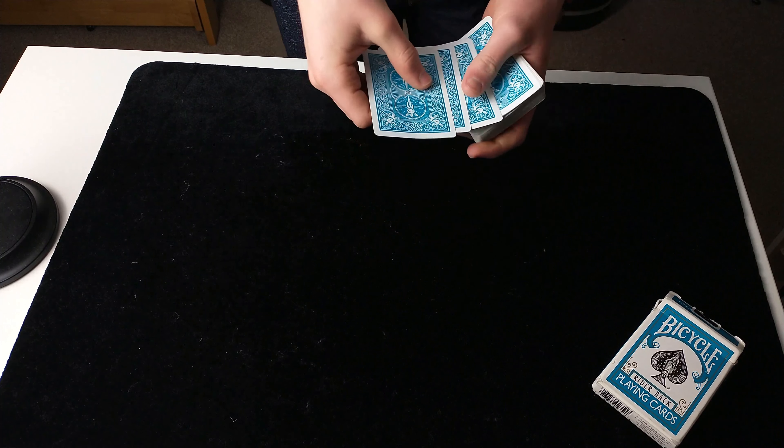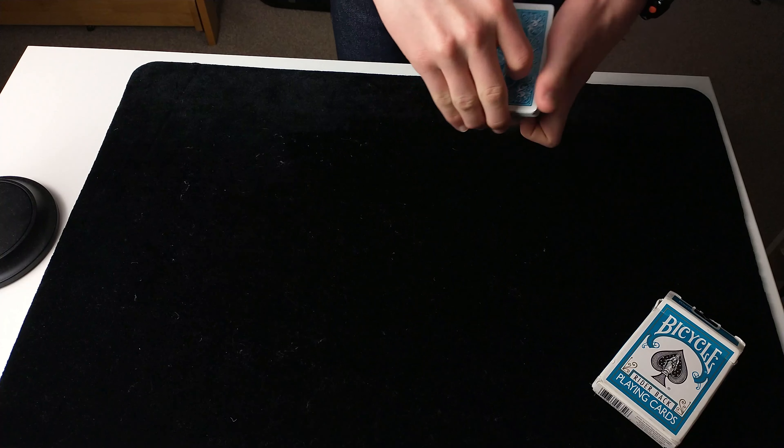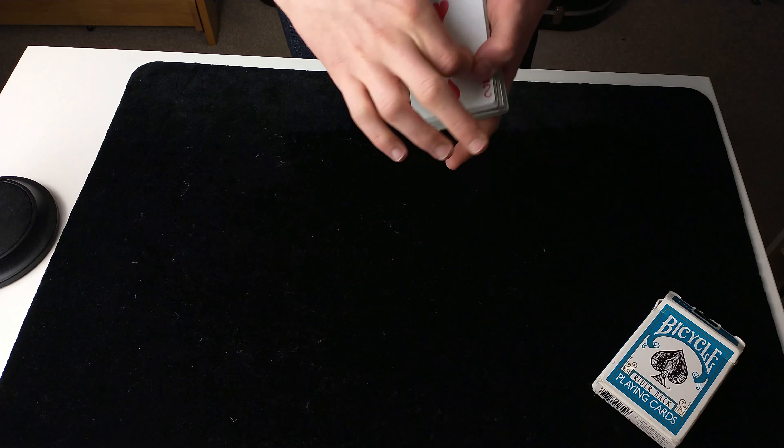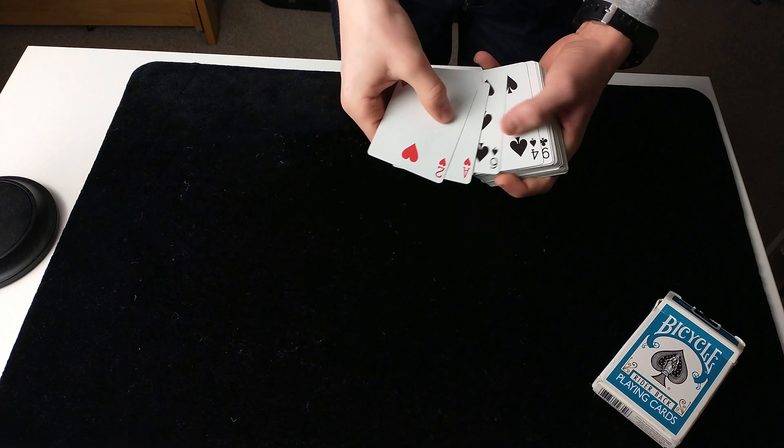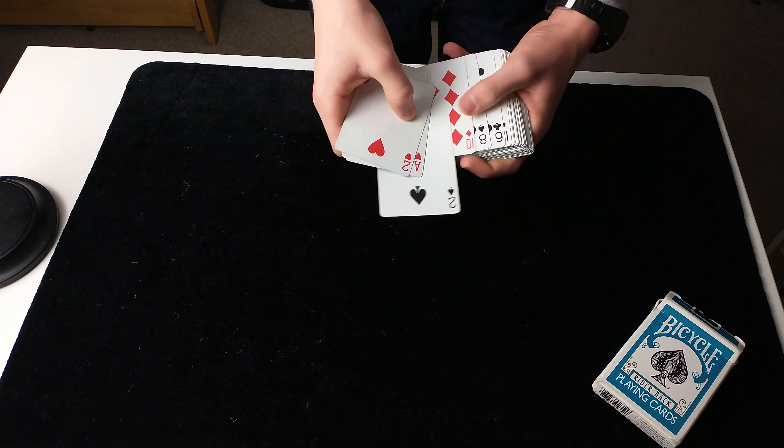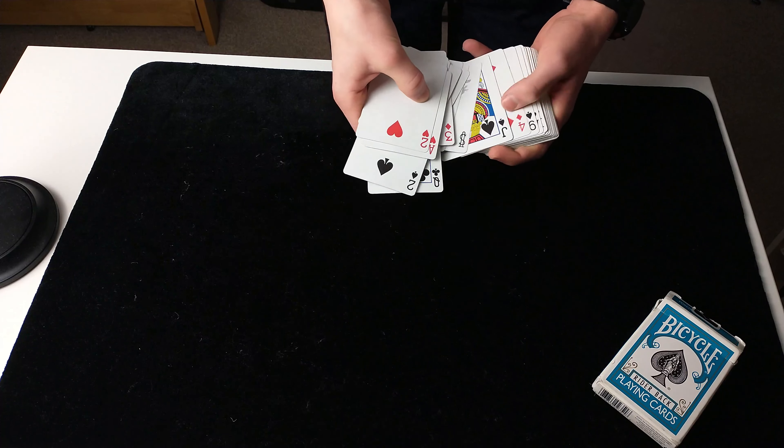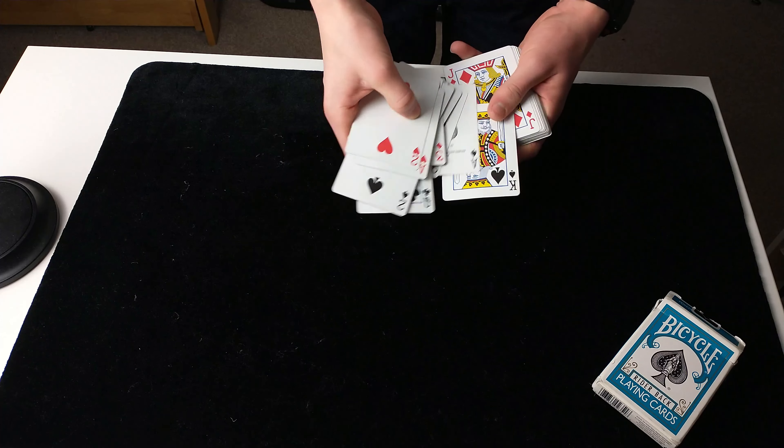Because I don't have a spectator here with me, I'm going to tap the front of four random cards. Let's take for example the two, the queen, the ace, and the king.